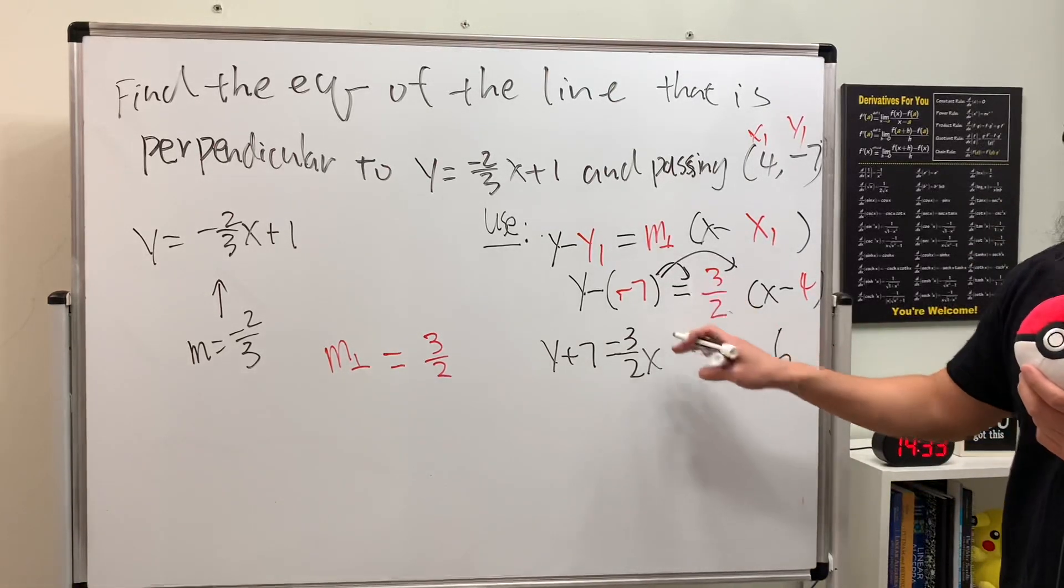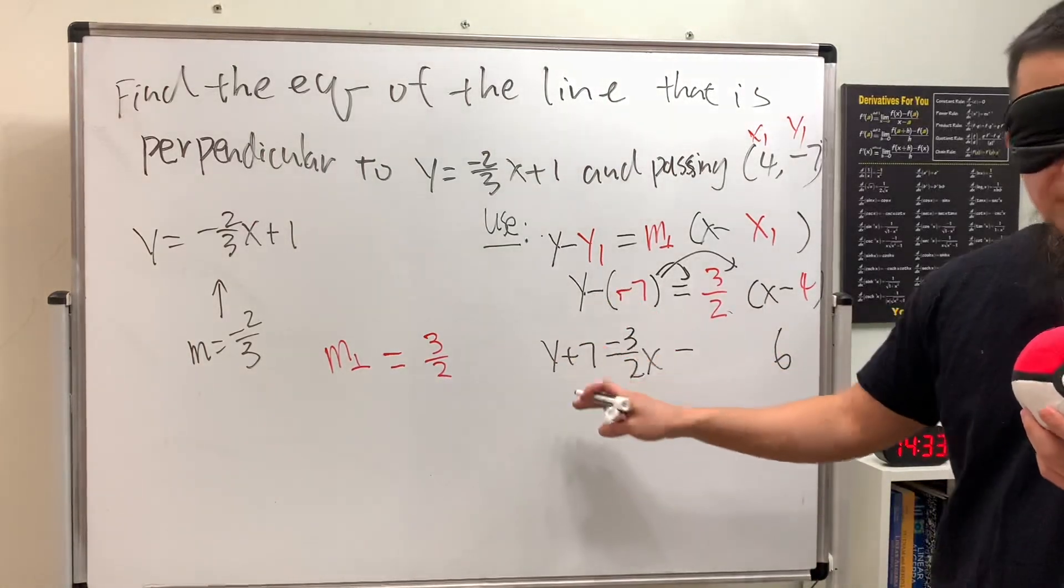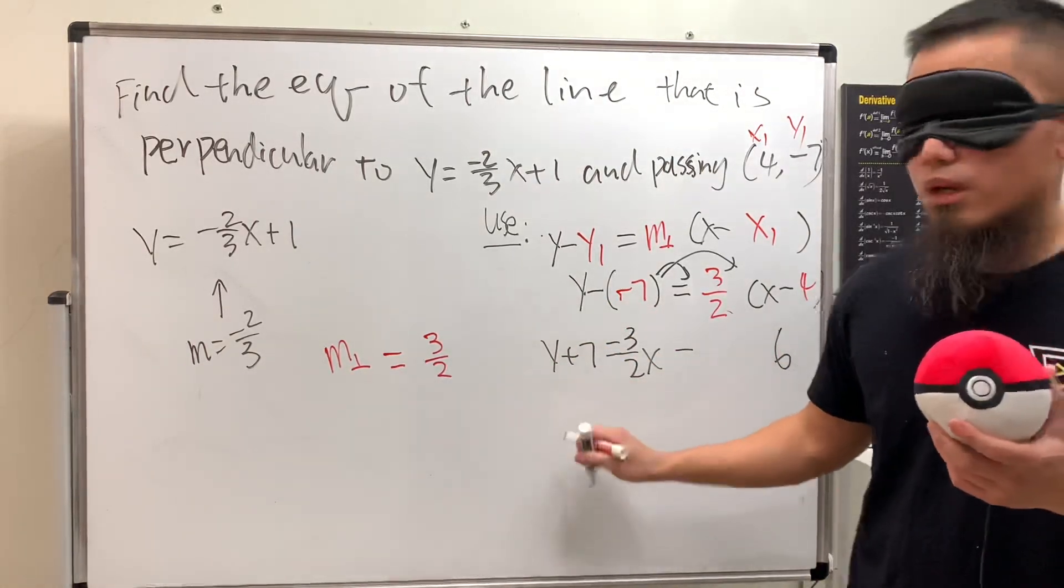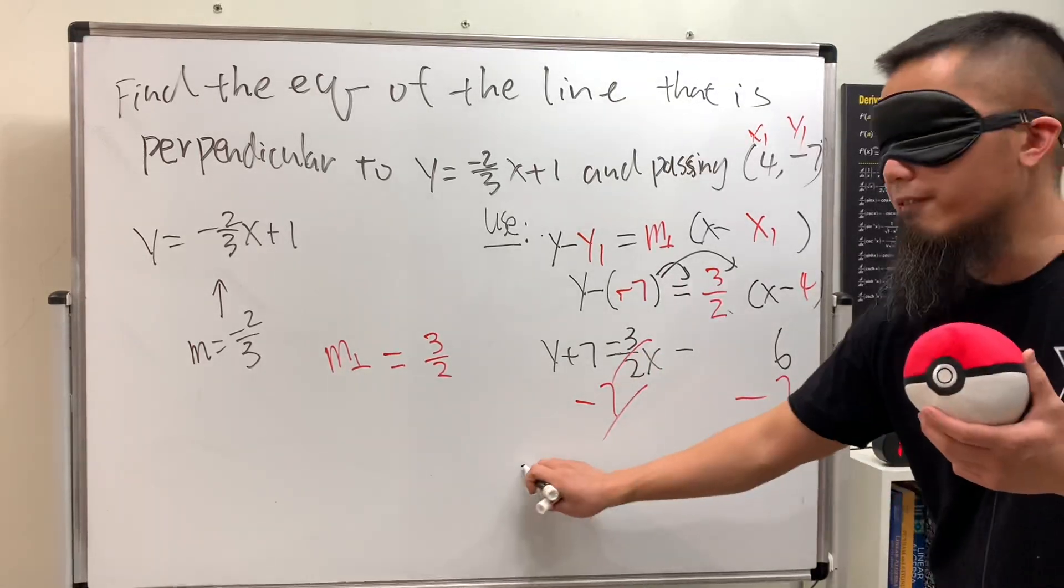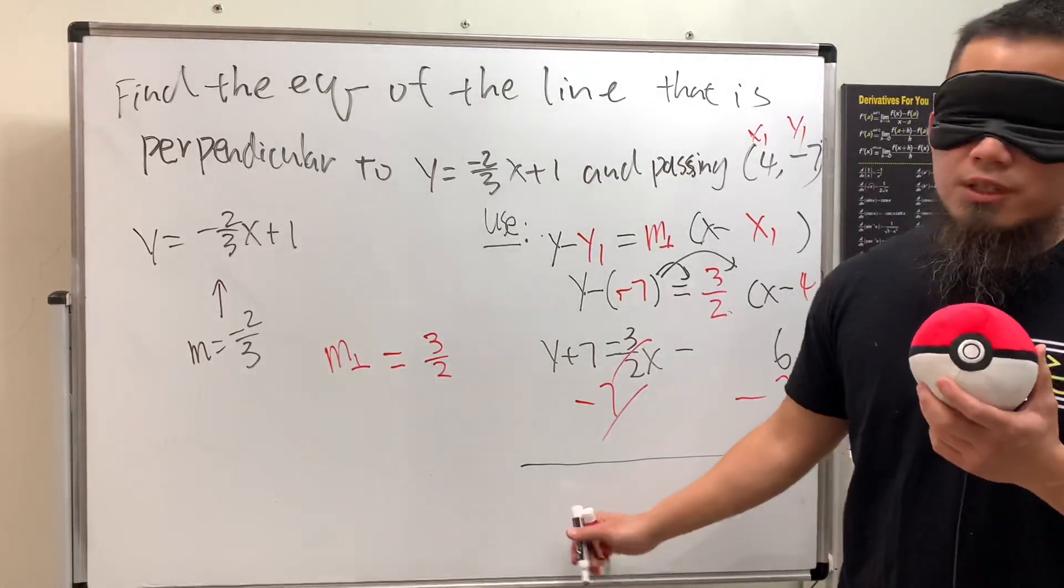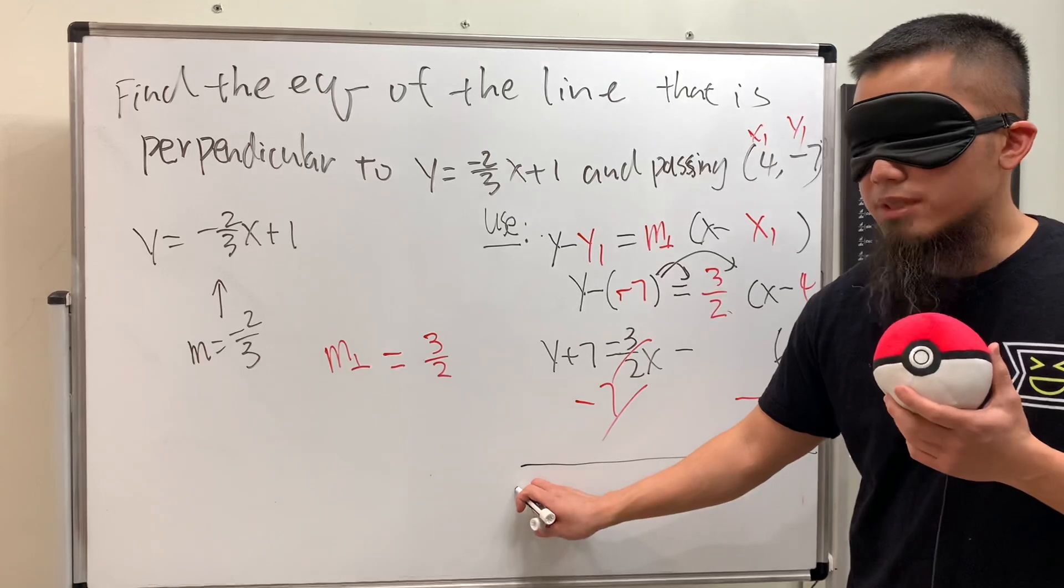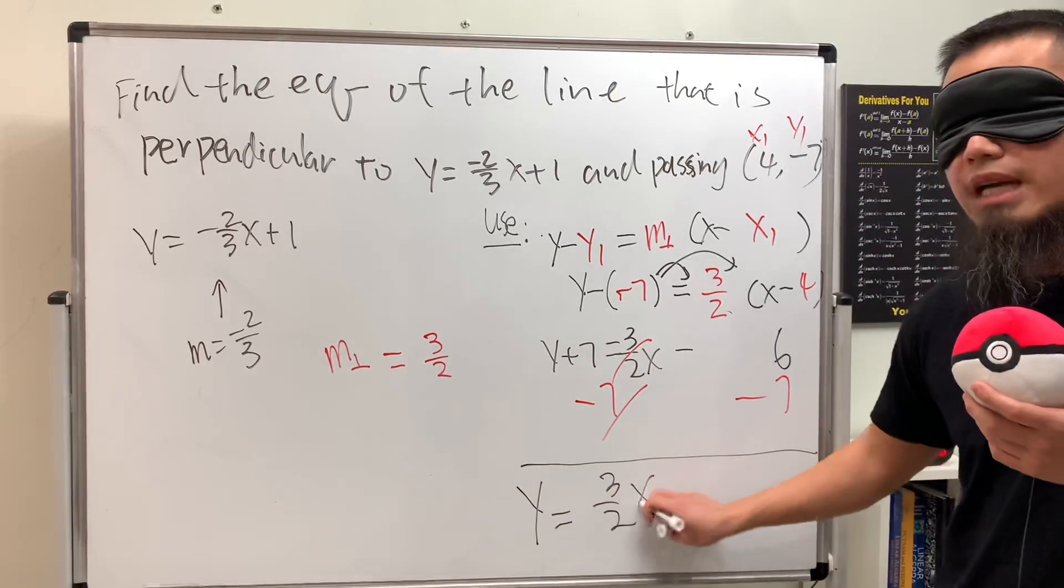We have three over two x minus six equals y plus seven. We subtract seven from both sides, so y equals three over two x minus thirteen.